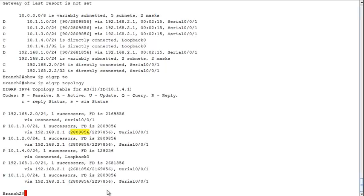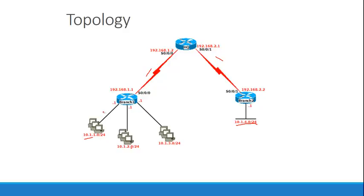Now let's say we don't want all interfaces to participate in EIGRP. Maybe we only want two specific ones to participate — for example, we want to hide some loopbacks on an internal LAN and use static or default routes for those. That means we have to configure EIGRP a little differently. Let's go back to Branch 1 and change this configuration.